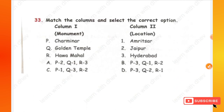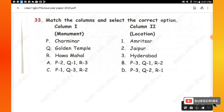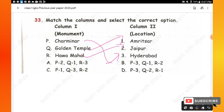Question 33: Match the columns and select the correct option. Column 1 gives monuments and Column 2 gives their locations. Charminar is in Hyderabad, Golden Temple is in Amritsar, and Hawa Mahal is in Jaipur. Hence the answer is option B.